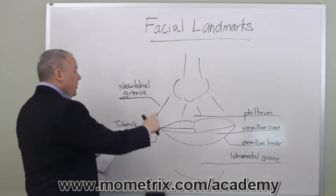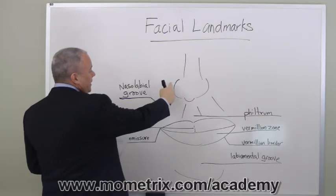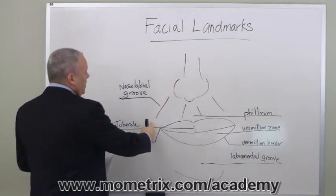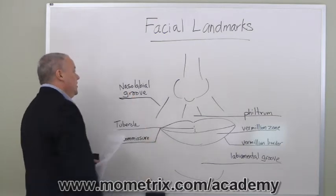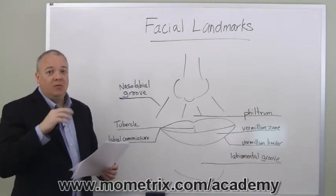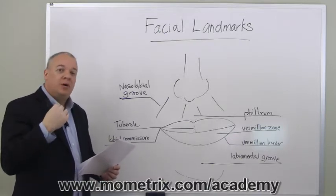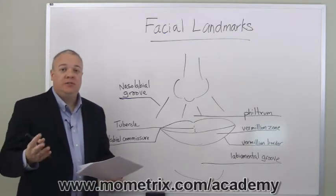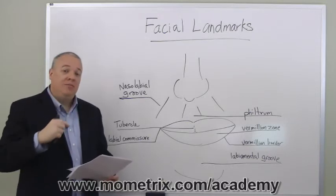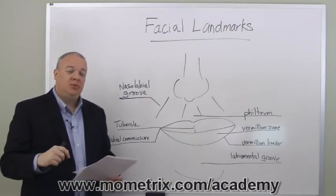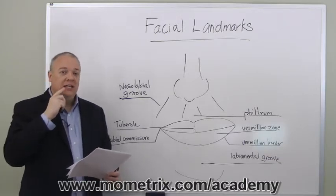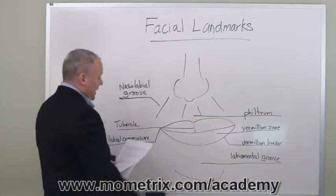We're going to begin with this groove right here, starting at the outer edge of the ala of the nose and extending down to the corner of the mouth. This is called the nasolabial groove. Looking for abnormalities in this area can indicate problems perhaps below. If you've ever seen pictures of Scarlett Johansson smiling, she has very pronounced nasolabial grooves — a good example of what we're talking about, from the ala of the nose extending down to the corner of the mouth.